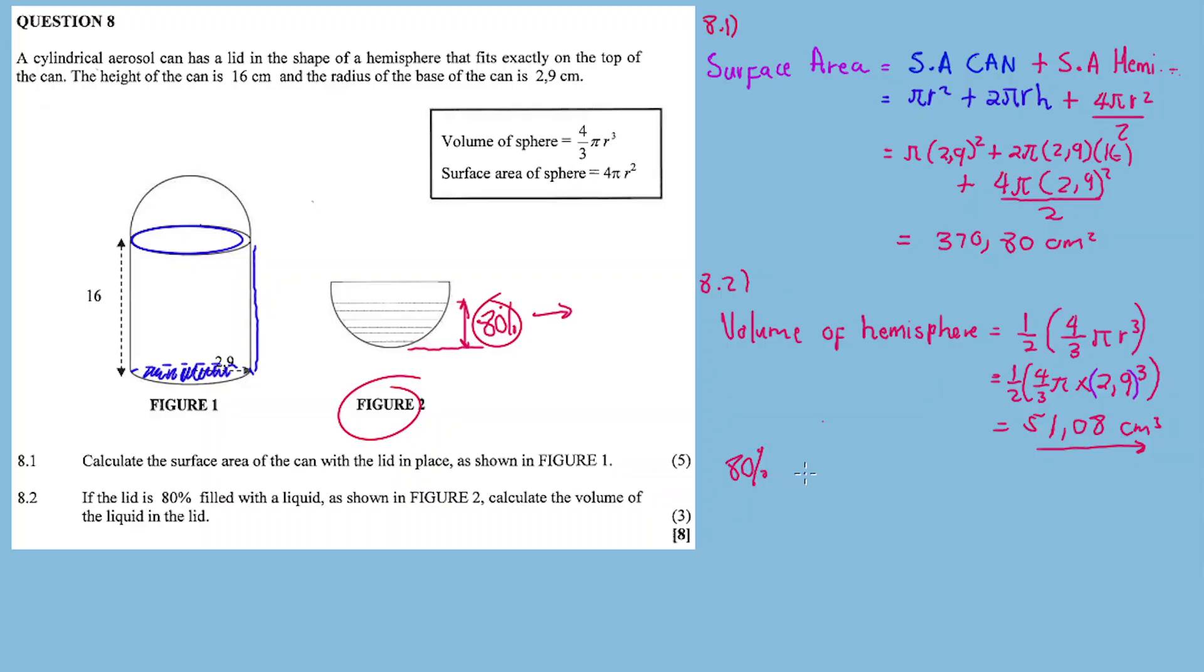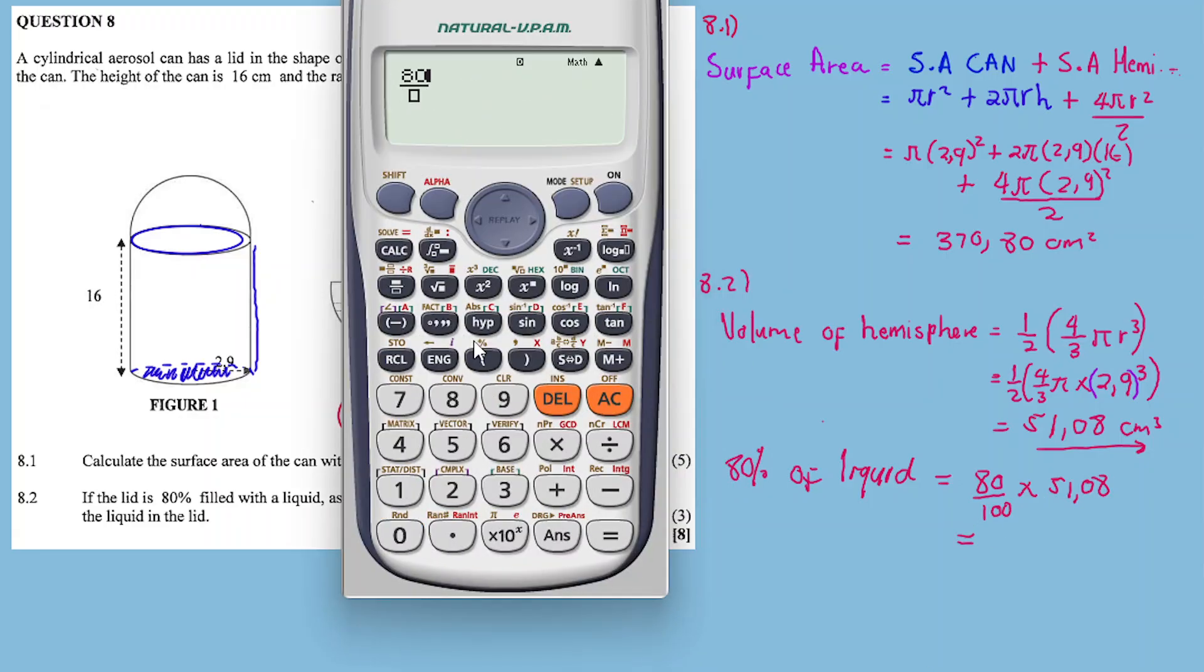Therefore, 80% of liquid equals 80/100 times 51.08.